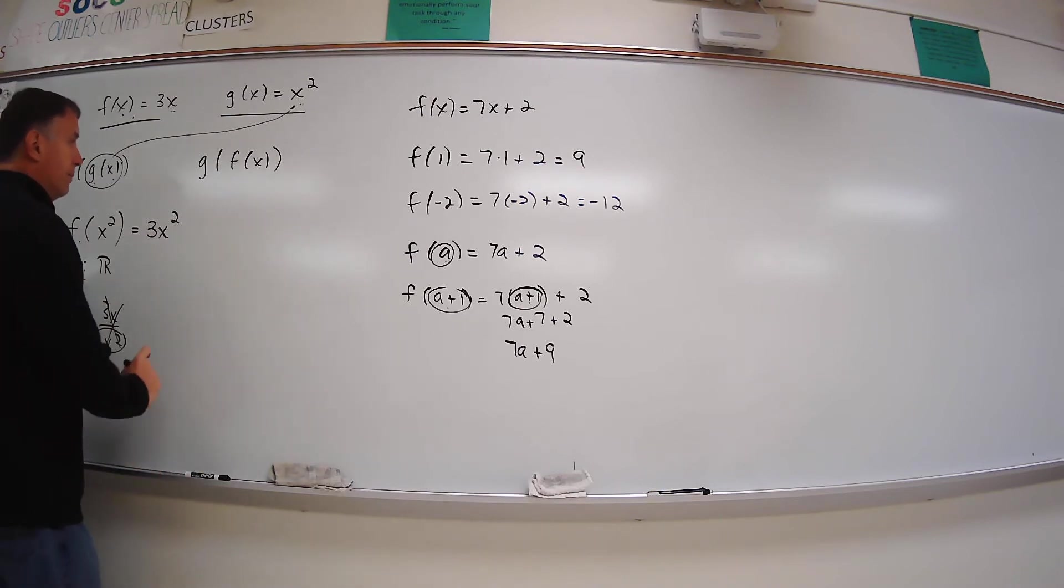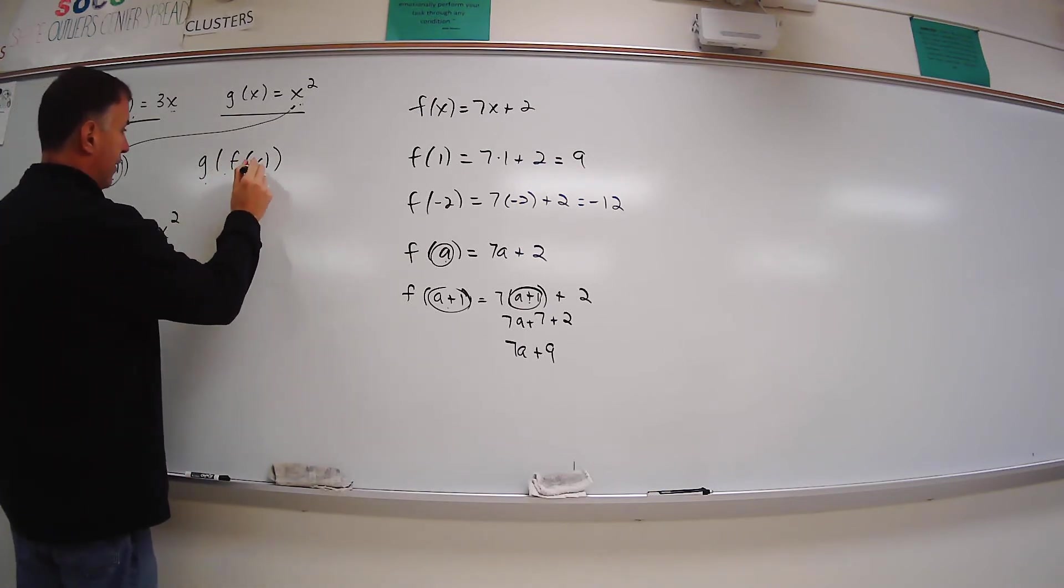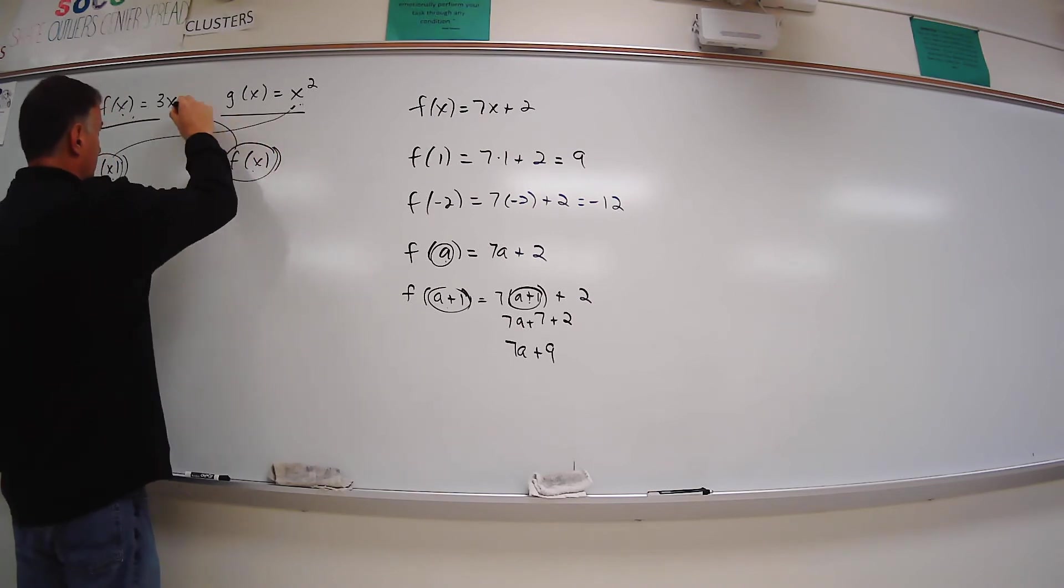So the next one, g of f of x. So whatever is in parentheses, I've got to take my f of x. I've got to see what f of x is. That's 3x. So I'm going to find g of 3x.